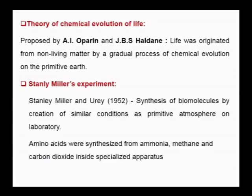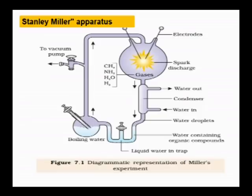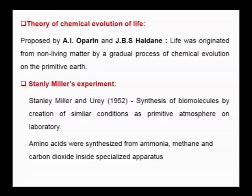The main intention of this experiment was to create similar conditions as the primitive atmosphere in the laboratory. In the experimental setup of Stanley Miller's experiment, they took prebiotic Earth gases in a spark discharge chamber — that is, ammonia, methane, hydrogen and water vapours. They obtained amino acids from ammonia, methane and carbon dioxide inside the specialised apparatus.